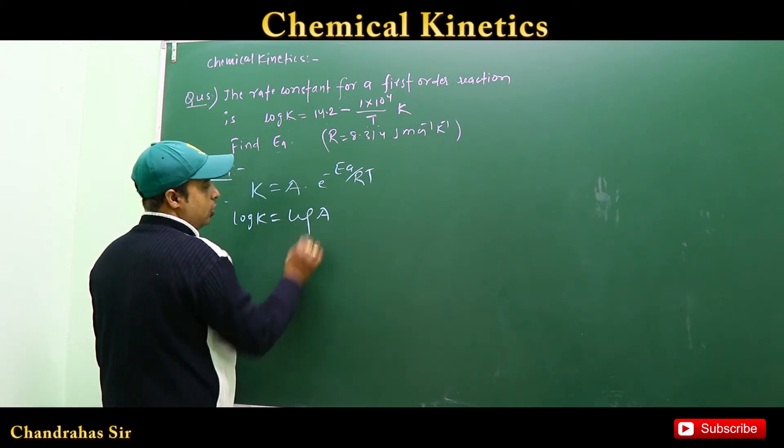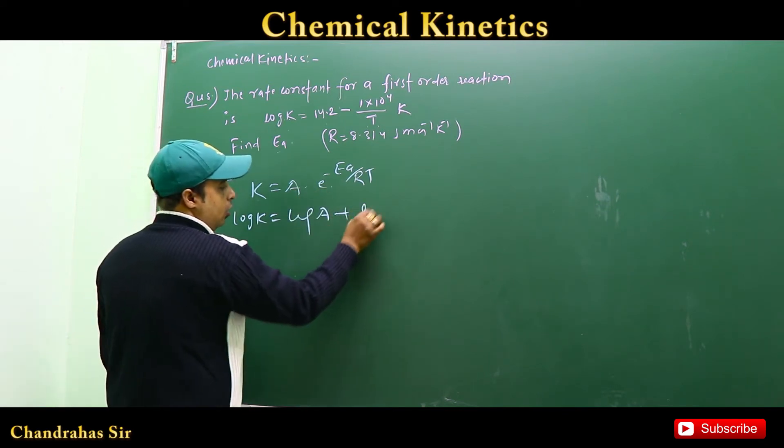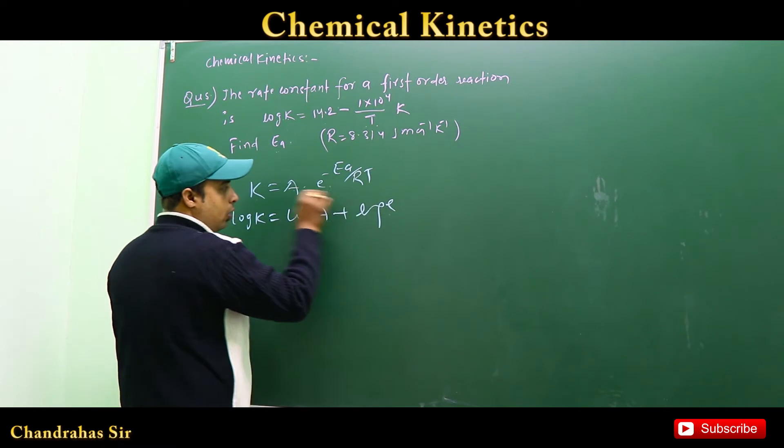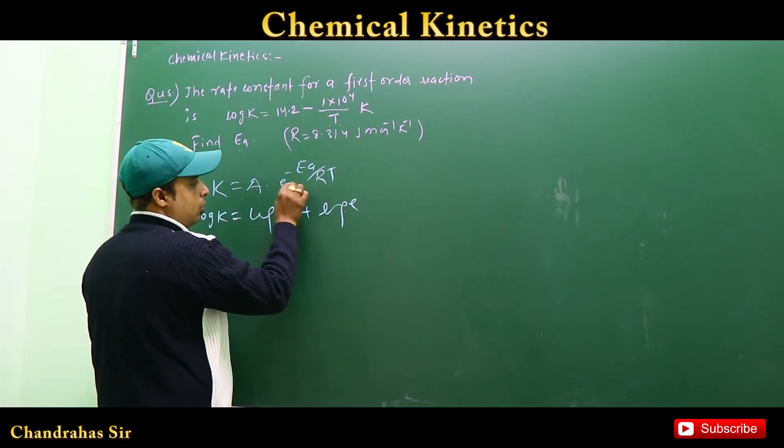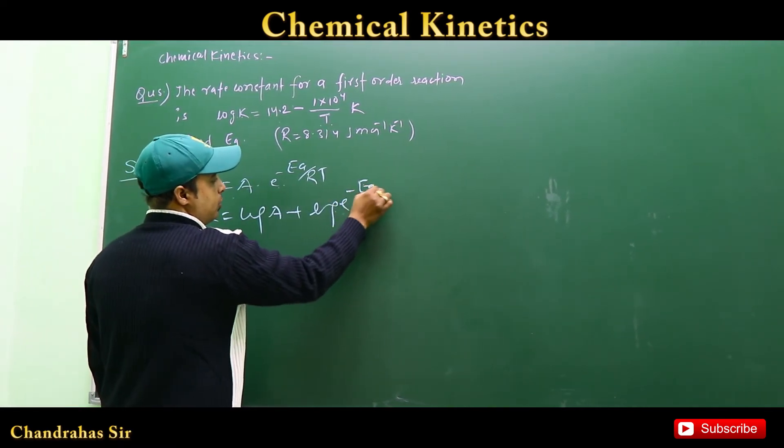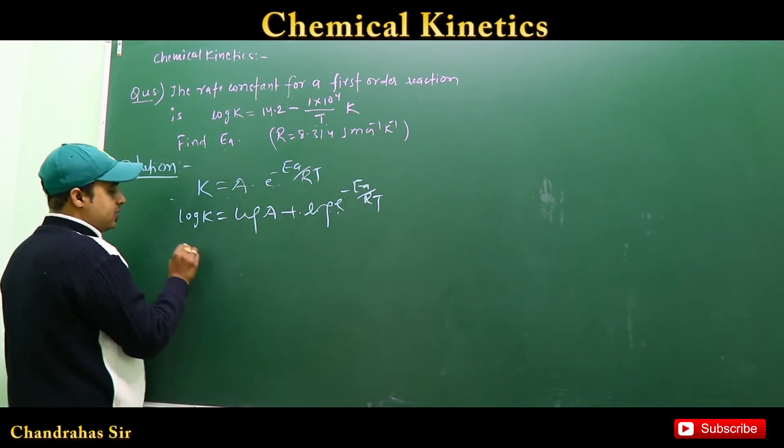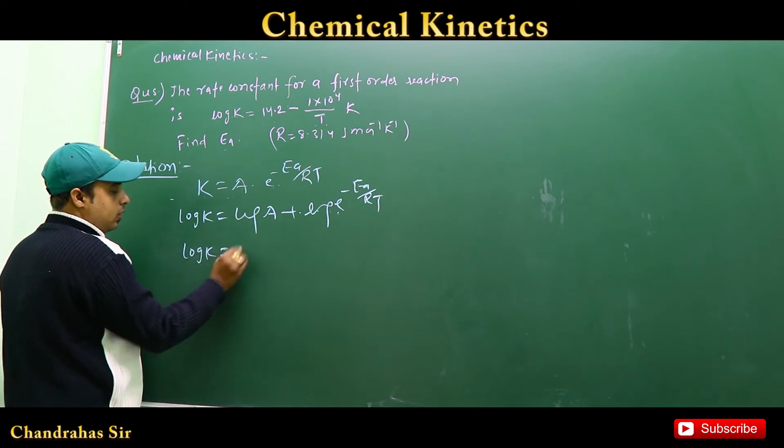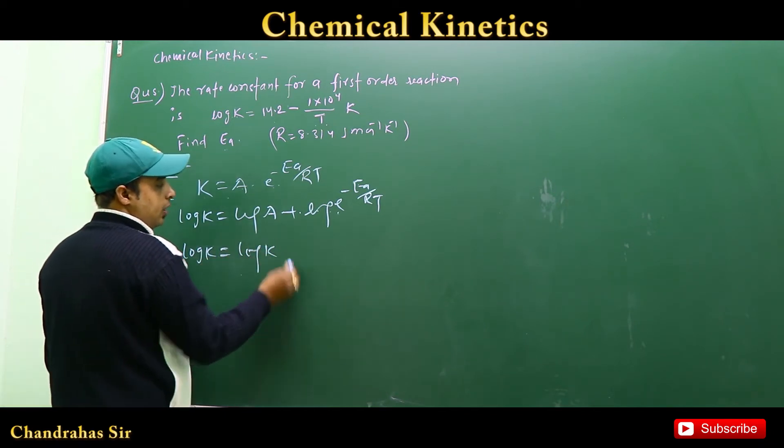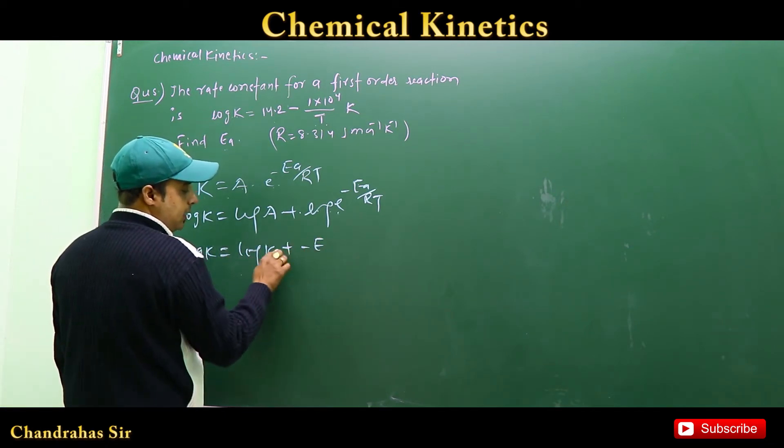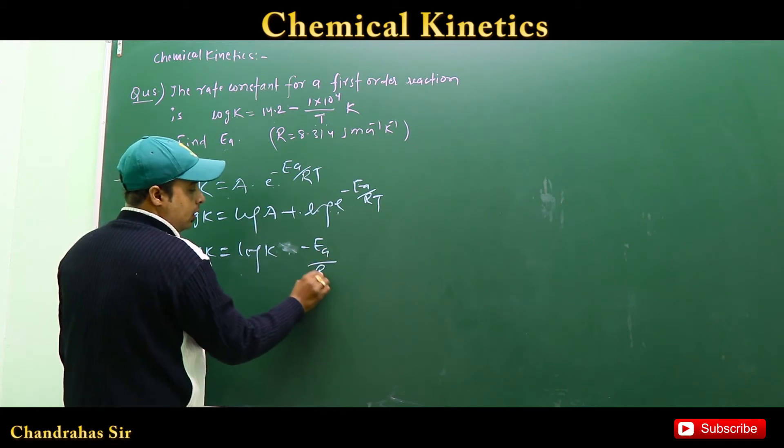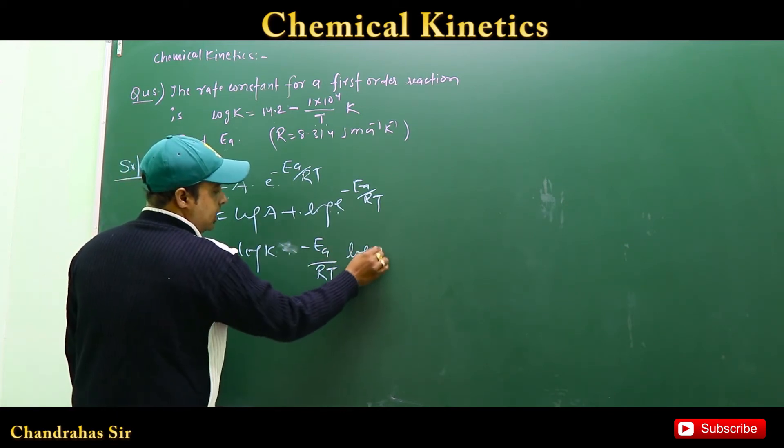Taking log on both sides, log K equals log of A into E power minus Ea upon RT. This becomes log A plus log E power minus Ea upon RT. Using log X to the power Y equals Y log X, we get log K equals log A plus minus Ea upon RT into log E.